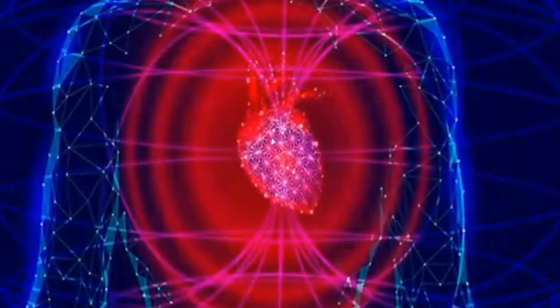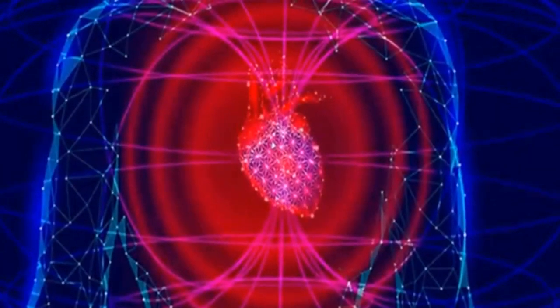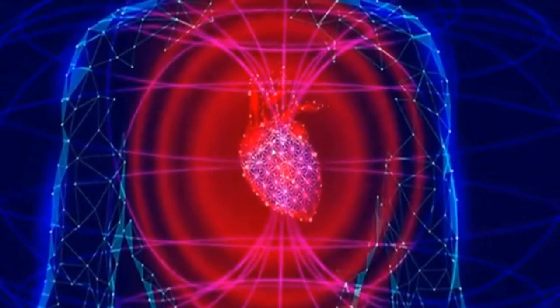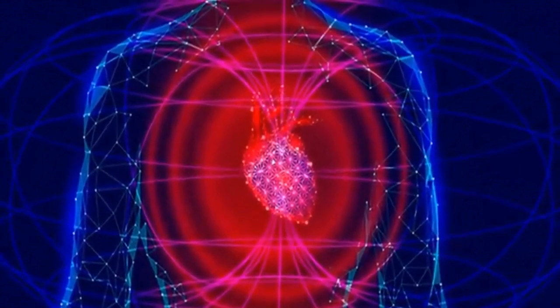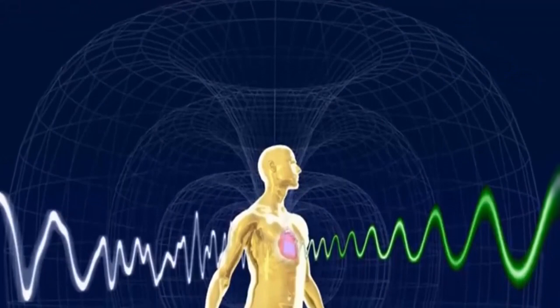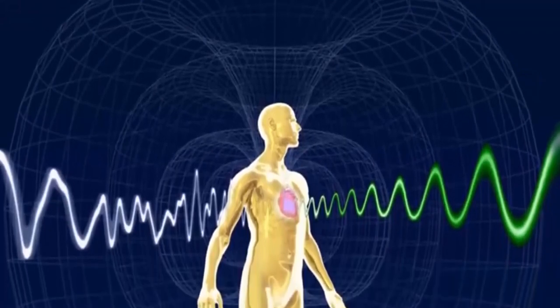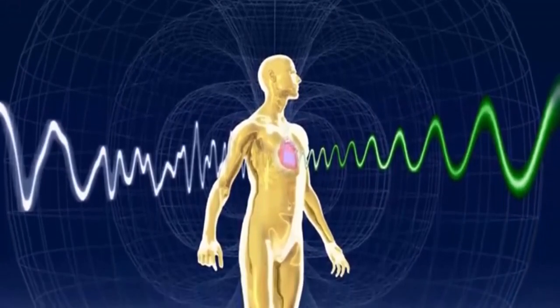In the realm of heart-brain communication, the heart emerges as a vital center of cognition and emotion, influencing brain function and perception. With its 40,000 neurons and intrinsic neural circuitry, the heart-brain operates independently of the cranial brain, shaping our awareness, perceptions, and intelligence.